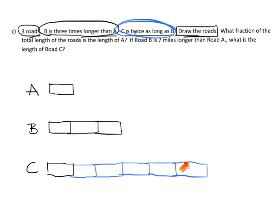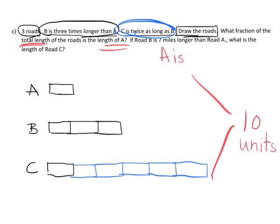Now the question is what fraction of the total length is A? Well the total length is 1, 2, 3, 4, 5, 6, 7, 8, 9, 10. So the total length is 10 units and A is one tenth. So A is one tenth of the total.